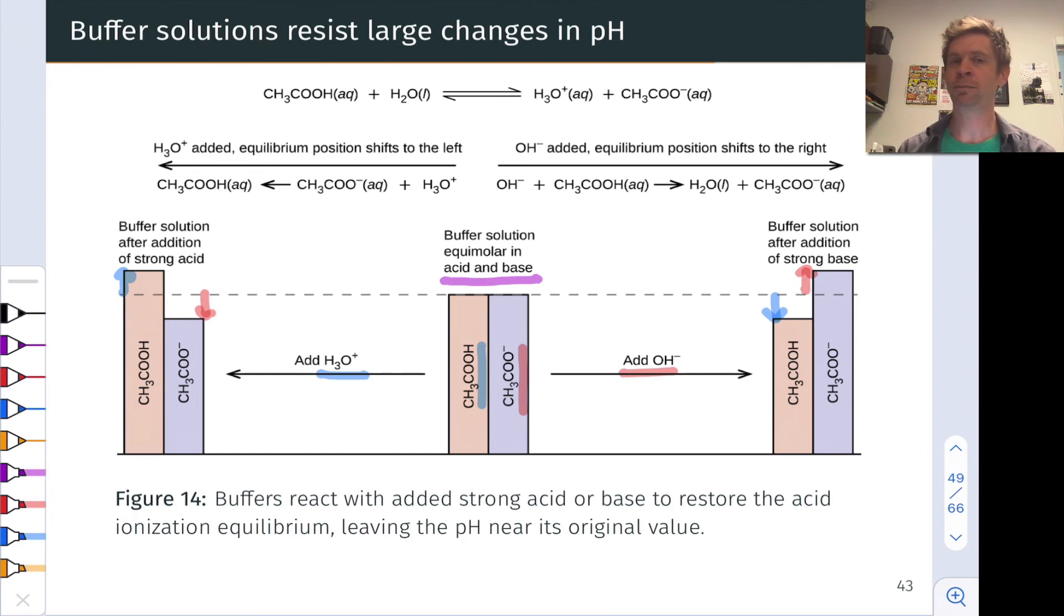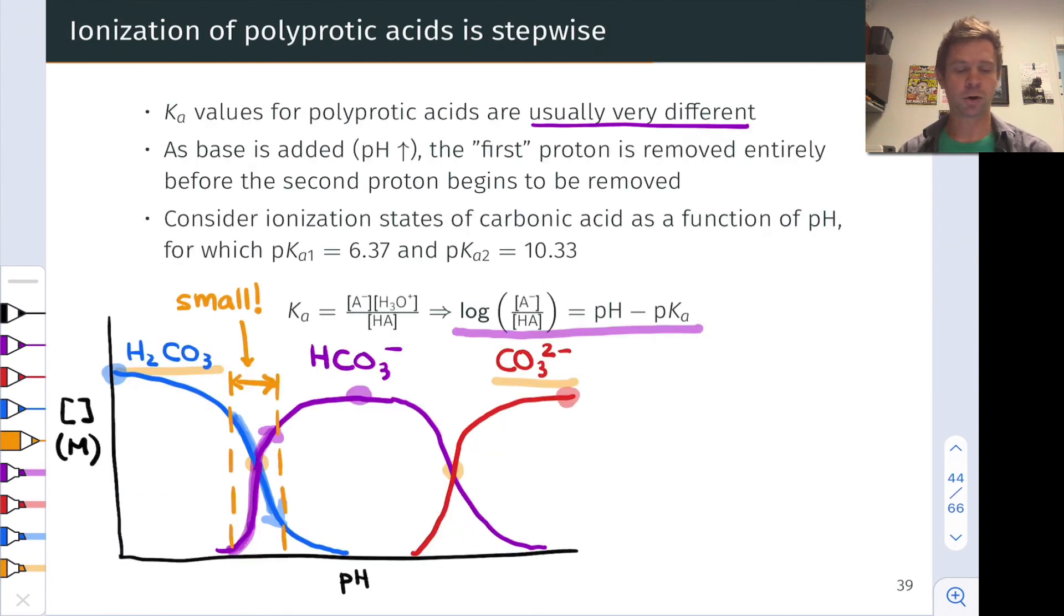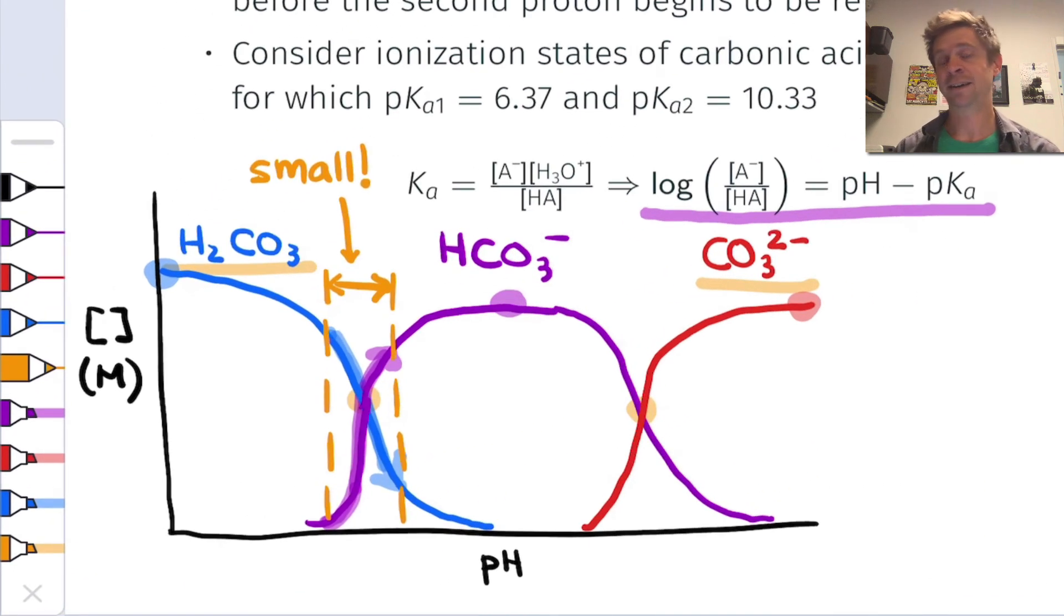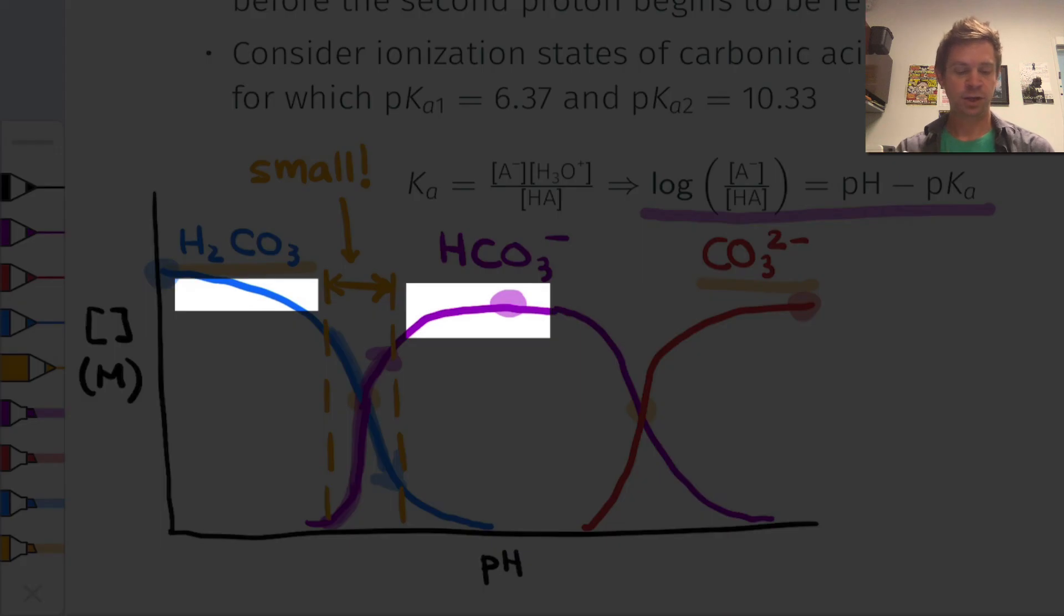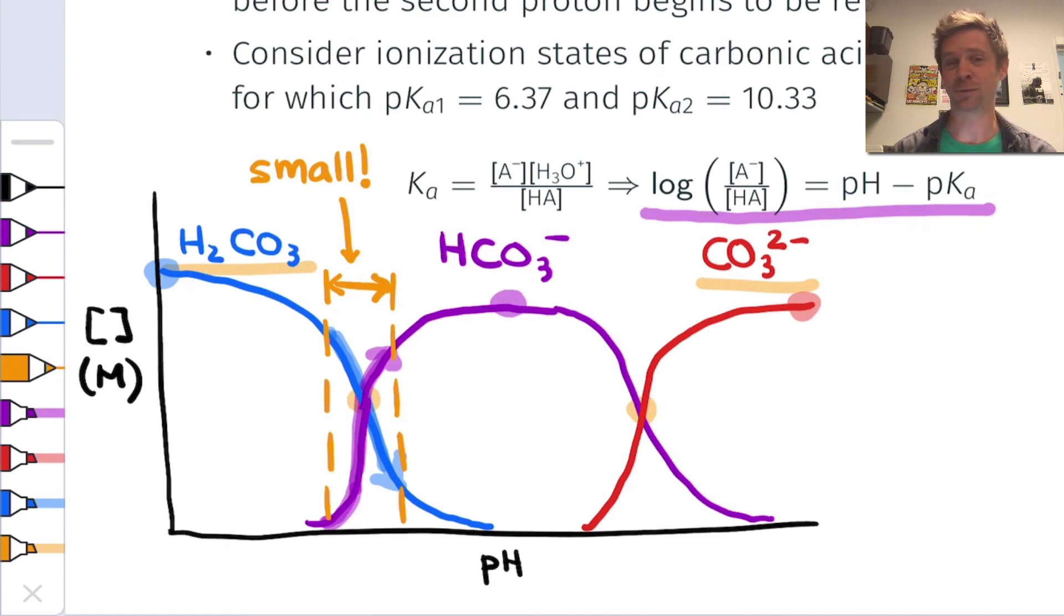This is important to keep in mind because it tells us that buffers have a limit. There is a limit to how much buffers can resist changes in pH. If we go back to this graph of ionization state as a function of pH, we see that we lose this capacity when we get outside of the buffer region, when the concentrations of the acid and conjugate base get so different that one or the other no longer has the capacity to react with added hydronium or hydroxide.